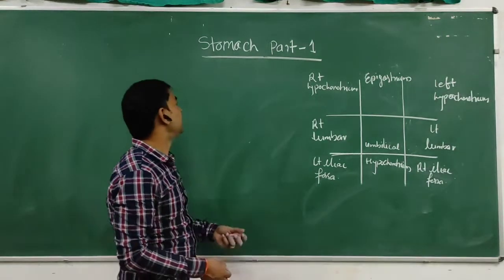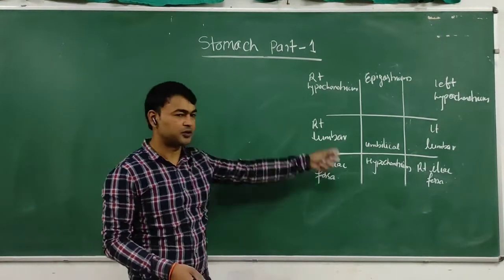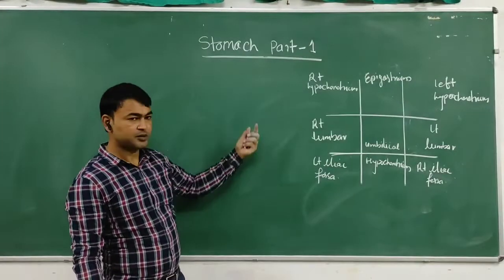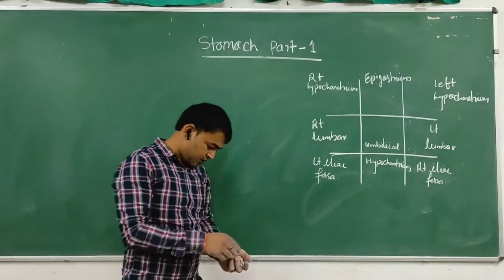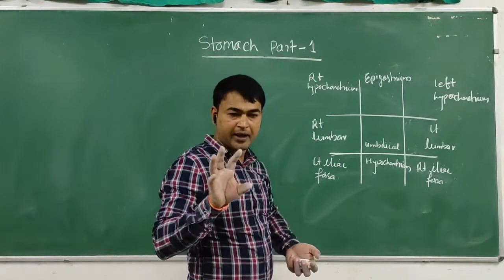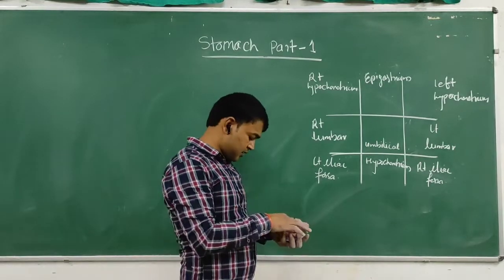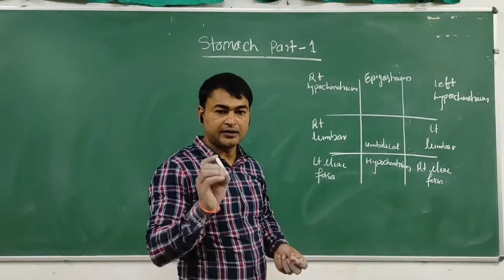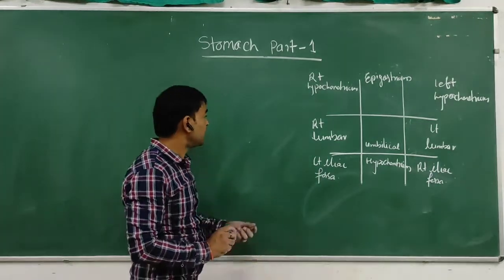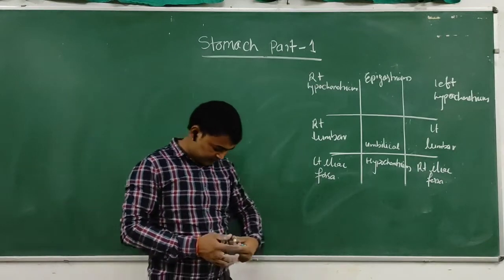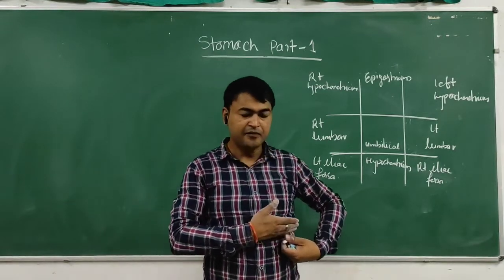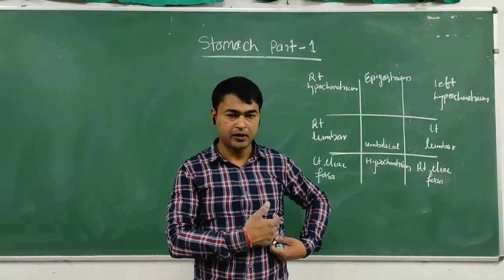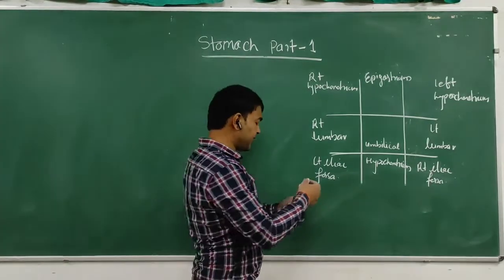Hello friends. We are talking about Stomach Part 1 — the gross features of the stomach. The stomach is a muscular bag and is the most distensible part of the digestive tube. It is located in the upper and left part of the abdomen, in the epigastric region.